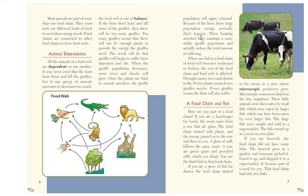Their hunting activities help maintain a more stable giraffe population and actually reduce the total amount of suffering. When one link in a food chain or food web becomes weakened or broken, the rest is affected. Drought causes trees and shrubs to die. Fewer plants means fewer giraffes survive. Fewer giraffes means the lions will also suffer.